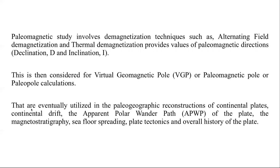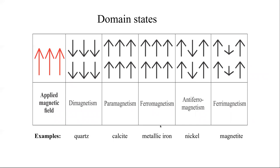These paleomagnetic directions are then used for calculating the virtual geomagnetic pole (VGP) position, also known as the paleomagnetic pole or paleo pole. This calculated paleo pole is then utilized for applications like paleogeographic reconstruction of continental plates, continental drift, the apparent polar wander path (APWP), magnetostratigraphy, seafloor spreading, plate tectonics, and understanding the overall history of any continental plate.